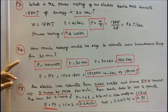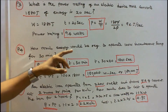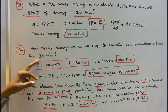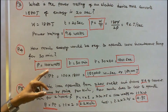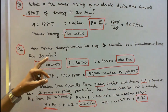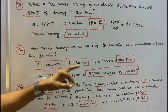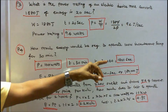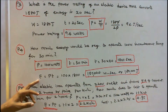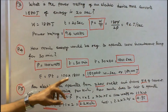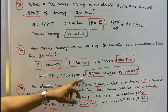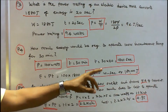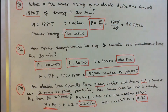Problem 4: How much energy is required to operate a 100-watt incandescent lamp for 30 minutes? Time is converted to seconds: t = 30 × 60 = 1800 seconds. Energy E = P × t = 100 × 1800 = 180,000 watt-seconds, or 180,000 joules.